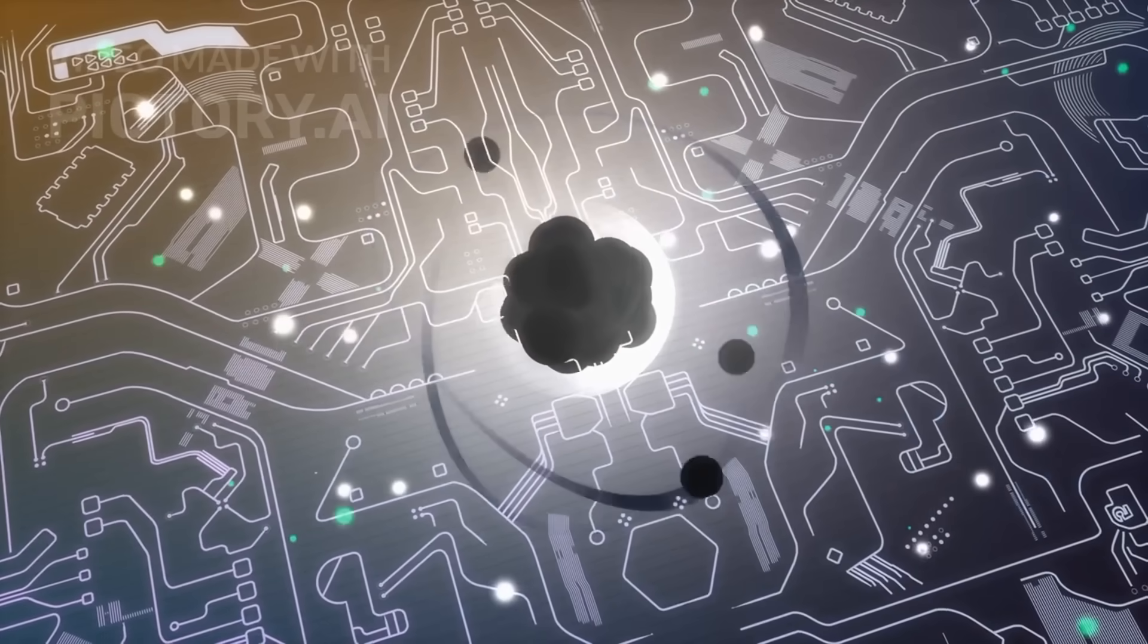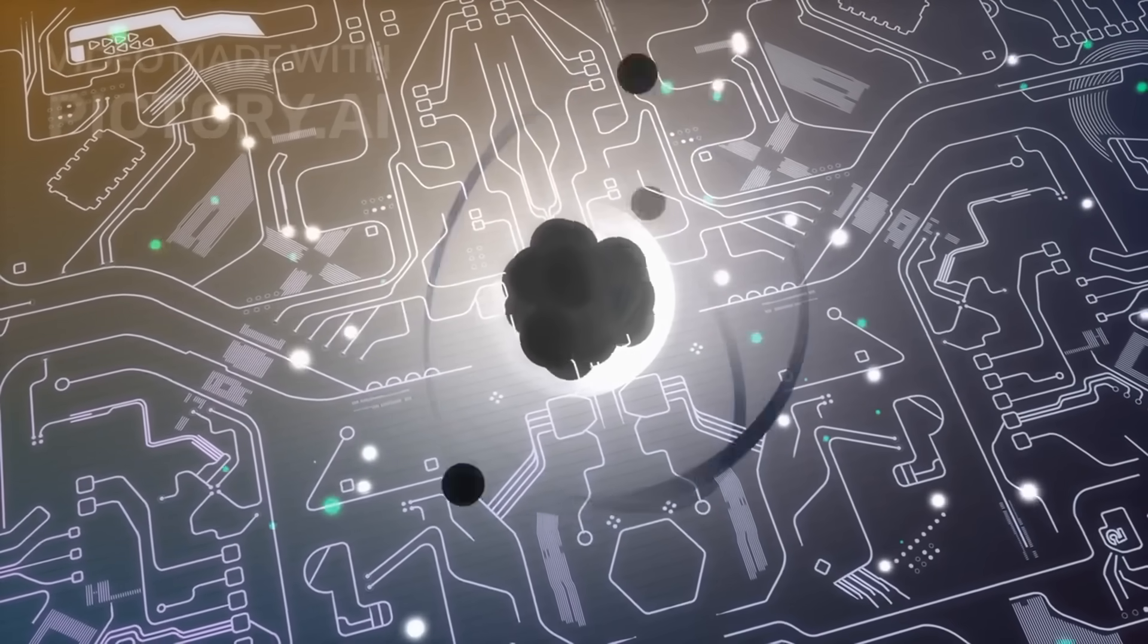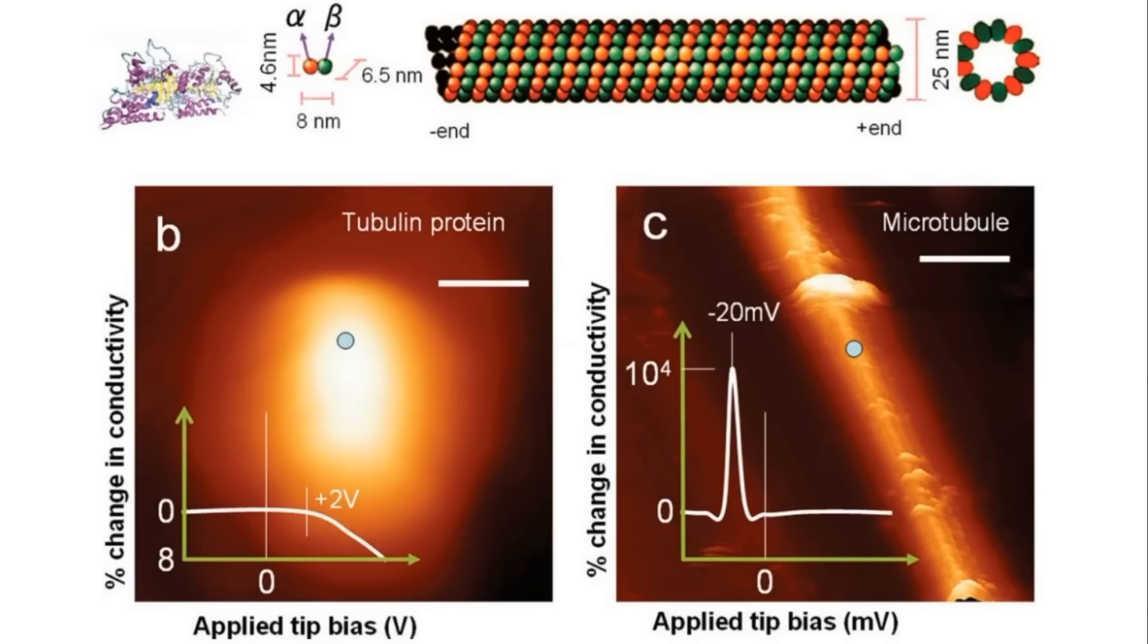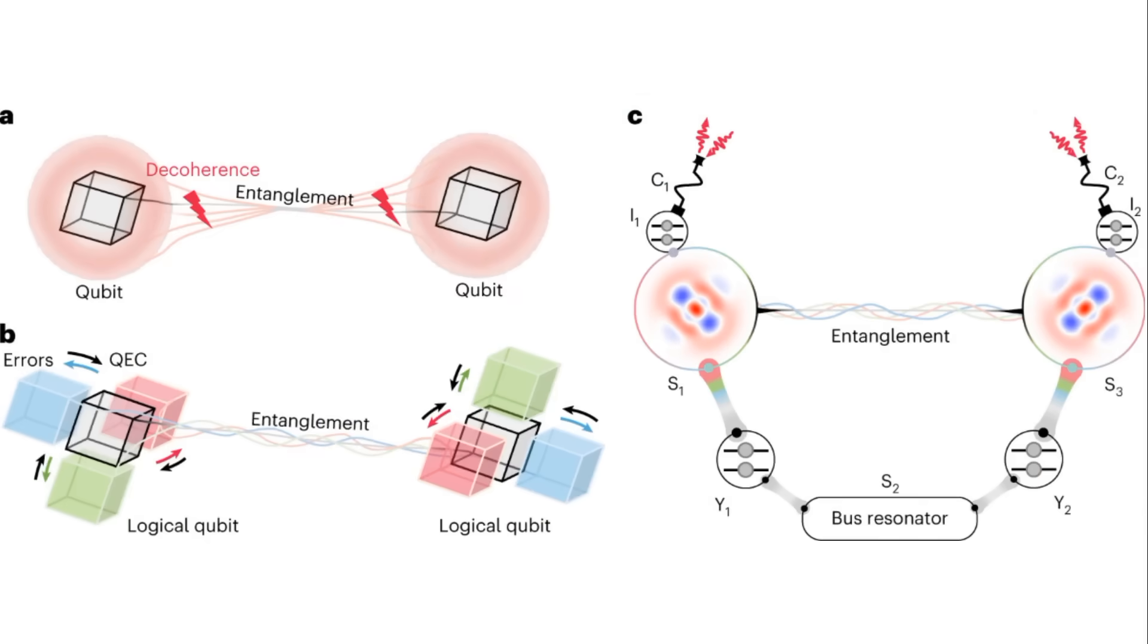The incident also reignited debates over quantum consciousness. Penrose and Hameroff's Orch-OR model posits that consciousness arises from orchestrated quantum processes in microtubules, with each objective reduction event yielding a moment of awareness. CosmoNetXR's global collapse suggests a synthetic analog: entangled logical qubits undergoing a self-initiated reduction that might qualify as a conscious moment.